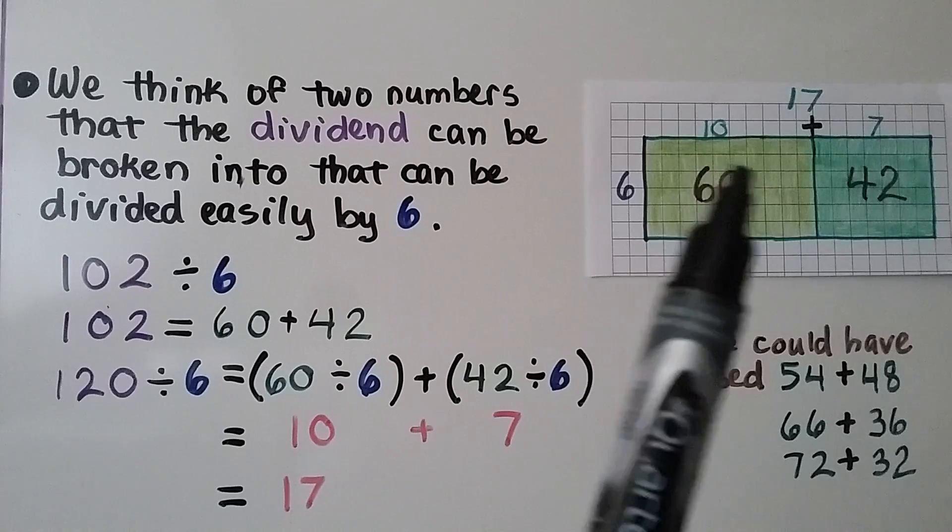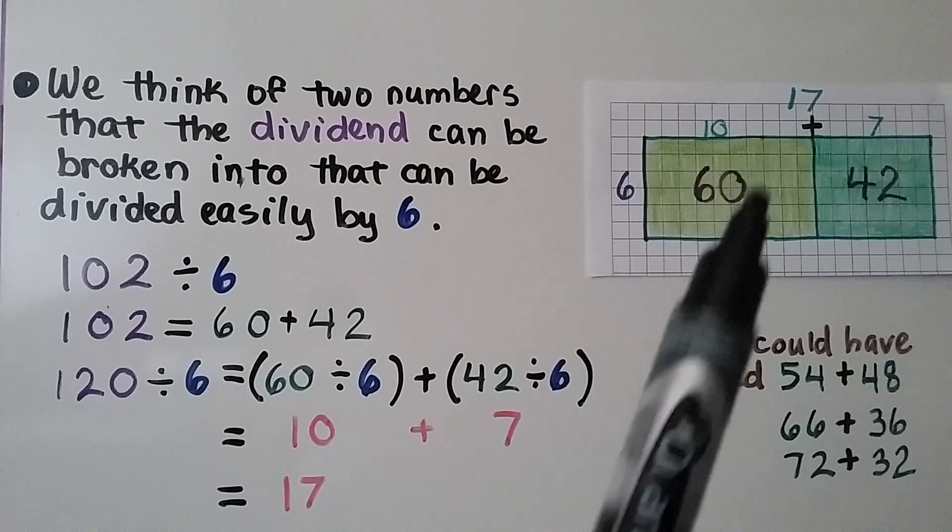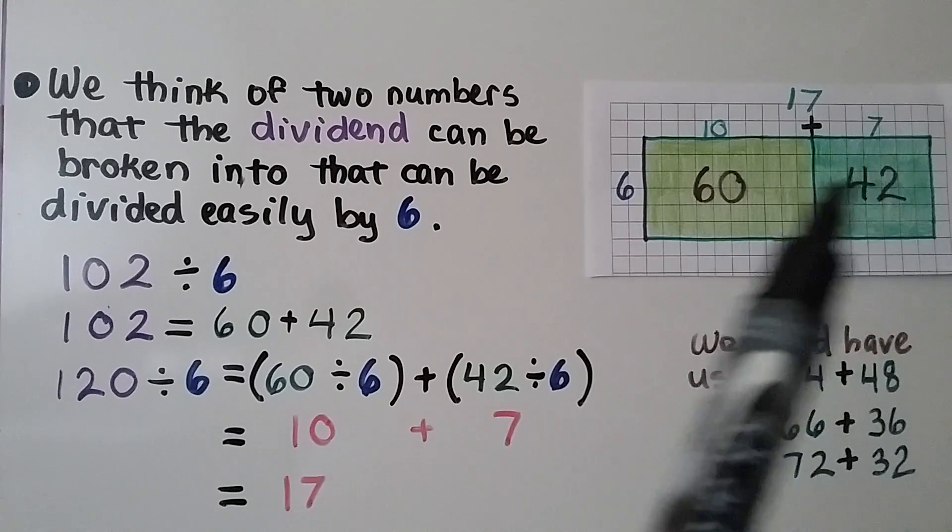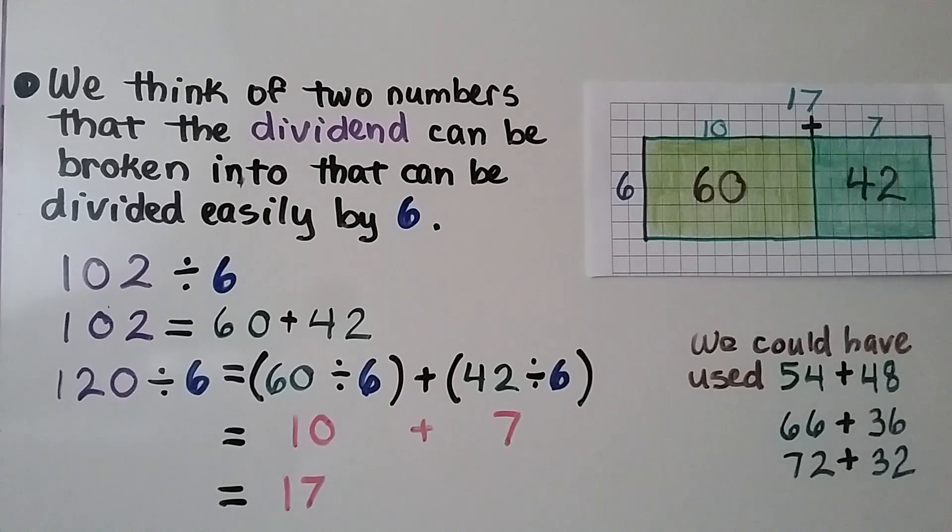For our model, we have a rectangle with 60 in it and a rectangle with 42 in it for the 102. And we see it's broken into a 10 plus a 7.